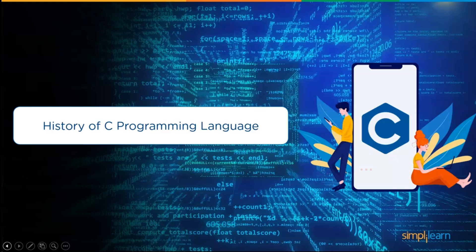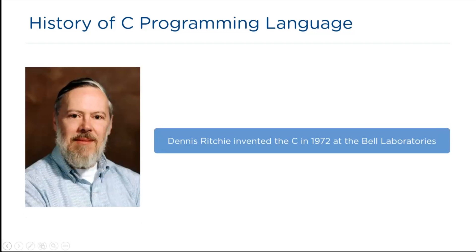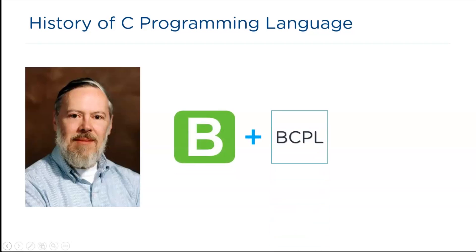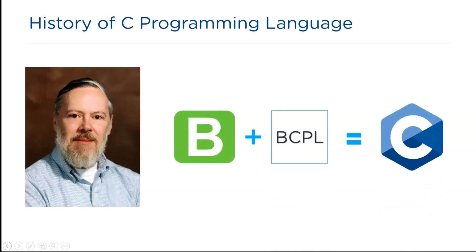Now let's begin with the history of the C language. Dennis Ritchie, a computer scientist, was able to identify the gaps and tap out the best features from both B and BCPL languages to invent a new hybrid. Hence, C was born in 1972 at Bell Laboratories.